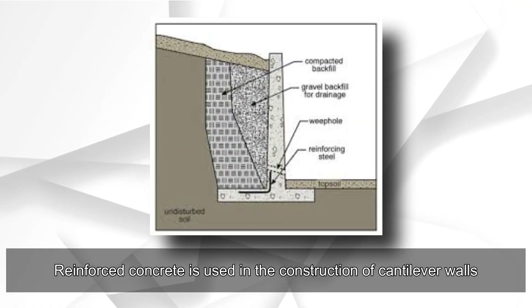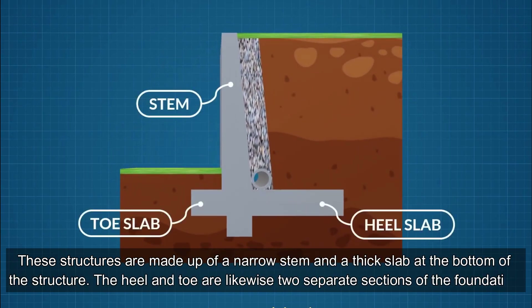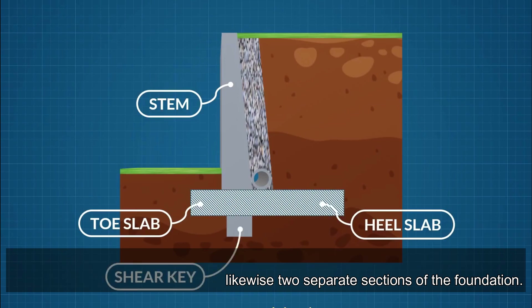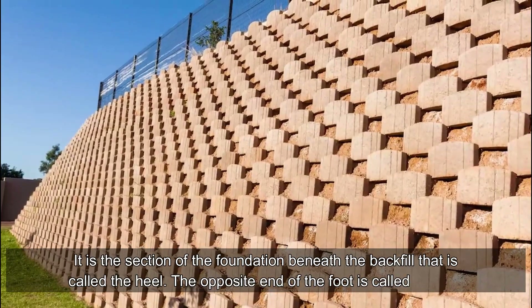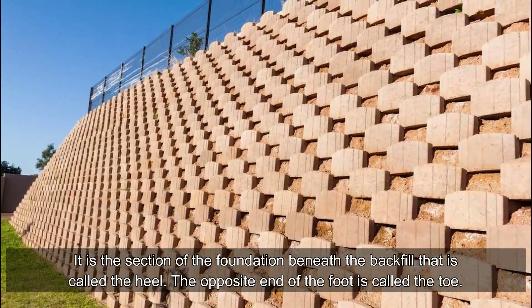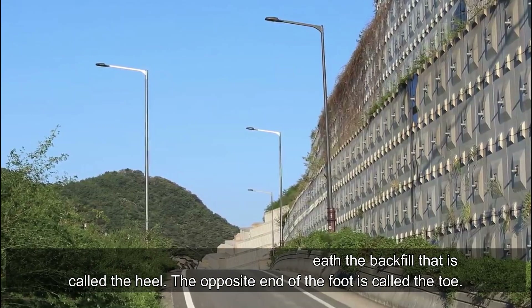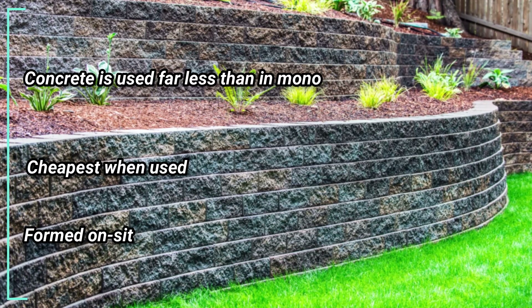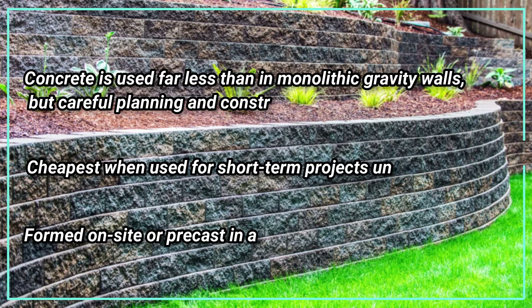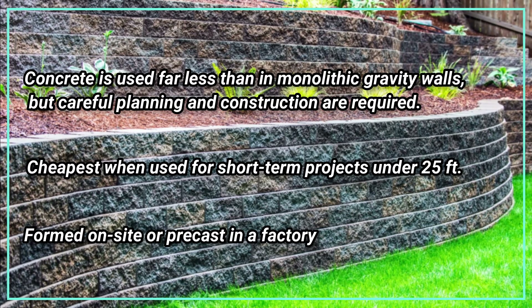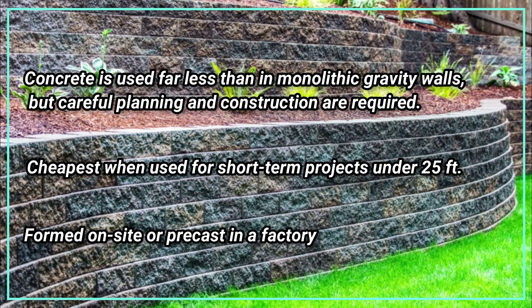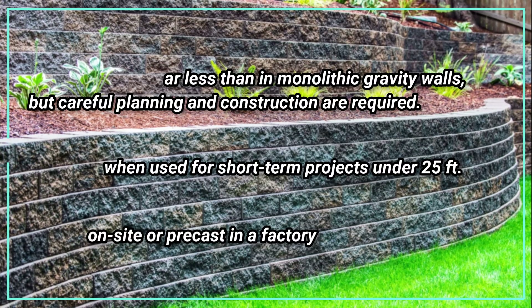Cantilever retaining walls are constructed using reinforced concrete. These structures are made up of a narrow stem and a thick slab at the bottom. The heel and toe are two separate sections of the foundation. The heel is the section of the foundation beneath the backfill, while the opposite end is called the toe. Concrete is used far less than in monolithic gravity walls, but careful planning and construction are required. They are cheapest when used for short-term projects under 25 feet, and can be formed on site or precast in a factory.